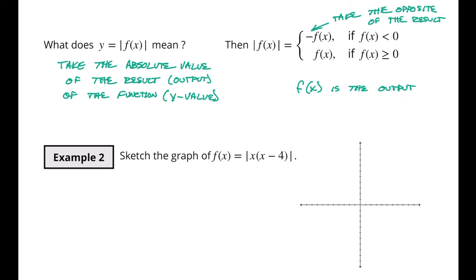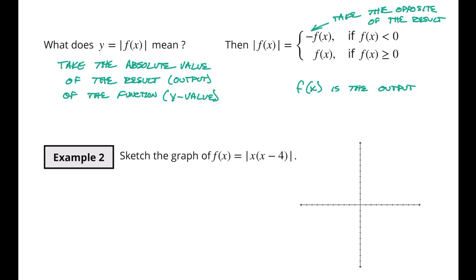Sketch the graph of F of X is equal to the absolute value of X times X minus four. Now this is a great review of quadratics. We know from our study of quadratics that we're going to have two X intercepts. One is going to be at X equals zero and one is going to be at X minus four equals zero which is positive four.